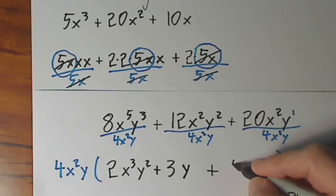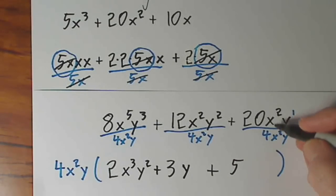And then our last term, 4 goes into 20 five times. x squared goes into x squared once. y goes into y once. So your last term just becomes a 5.